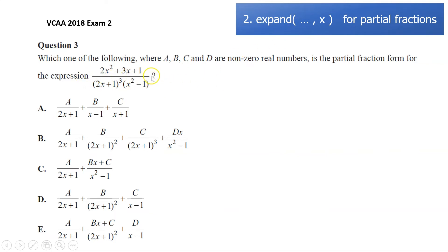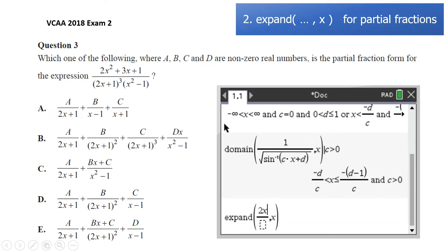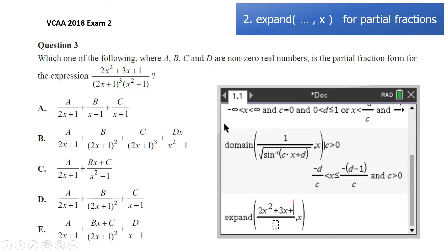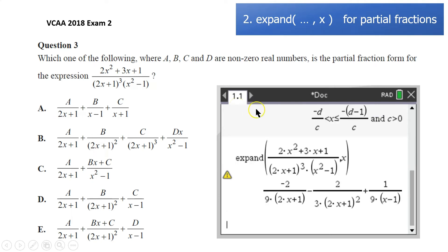We've just got to type it in, expand x, and then it's just a matter of comparing what we get to these options. So if we do that one, expand, 2x squared plus 3x plus 1 on the bottom, 2x plus 1 all cubed, 2x times x squared minus 1. And of course, it's just crucial that you actually type it in correctly, so just double check it. If you make a mistake, you're going to have a mistake.